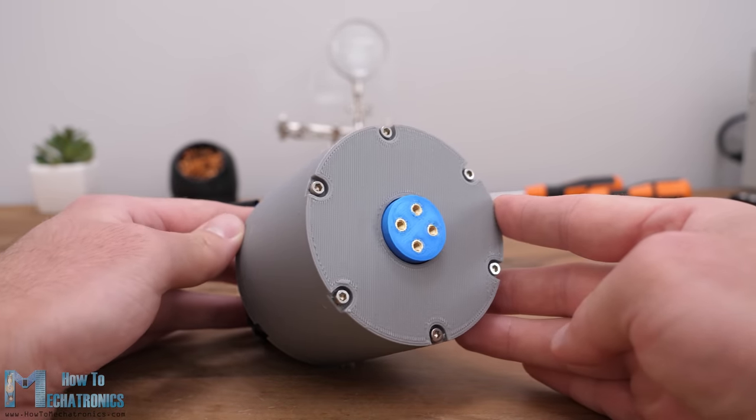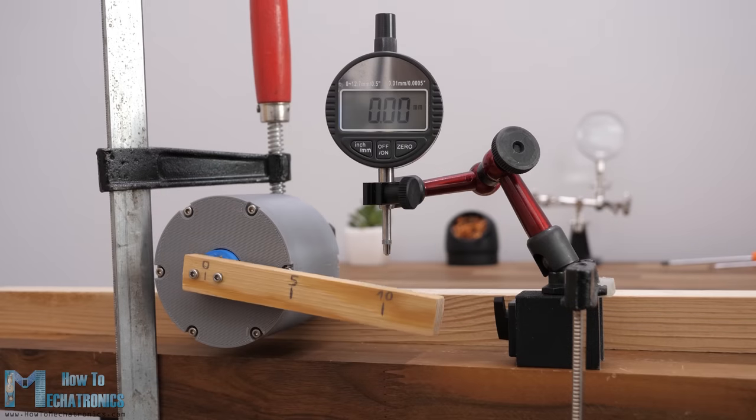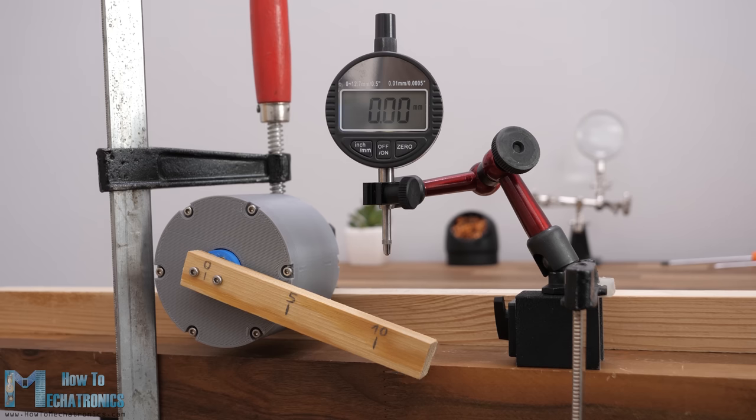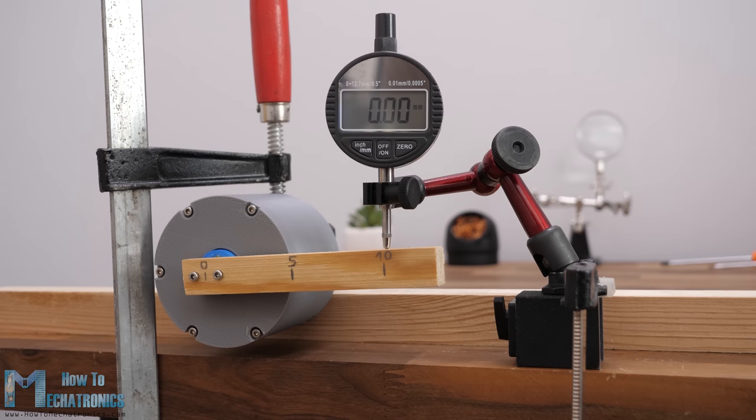Ok, so now let's do some tests to see how well the gearbox will perform. First let's check the accuracy of the gearbox or the backlash. I was actually surprised how good the accuracy or the repeatability was. At a distance of 10 cm there wasn't even one hundredth of a millimeter play.